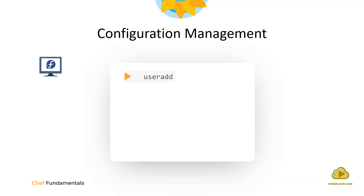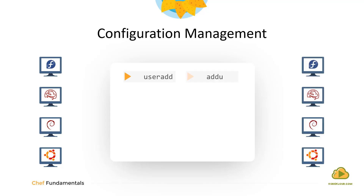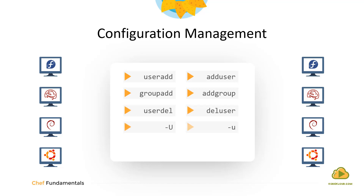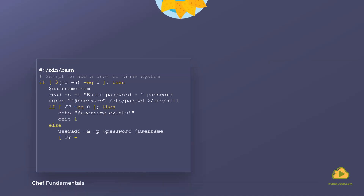Creation of a script for a single operating system is easy, but creating a script for a heterogeneous environment will need additional effort. For instance, the command to create a user differs between different operating systems, and the same goes with the options as well — whether to use uppercase U or lowercase U, the difference between uppercase R and lowercase R. We also need to consider the state of the existing environment. How do you handle a situation where the user already exists? A script developed for user creation looks like about ten lines, but it's far from complete — it only works on one operating system and does not handle all cases very well.